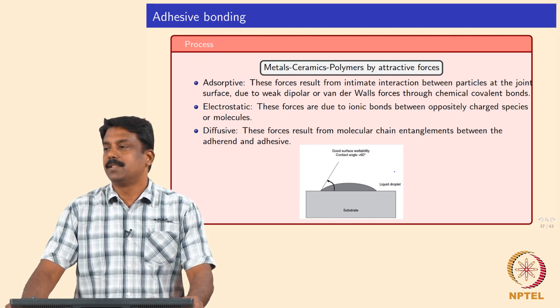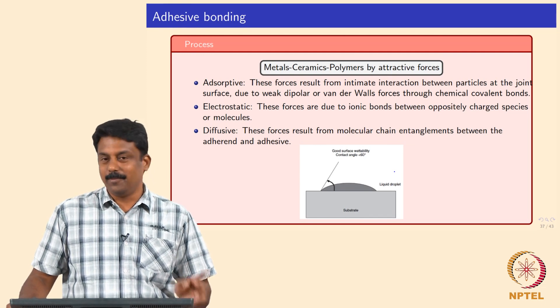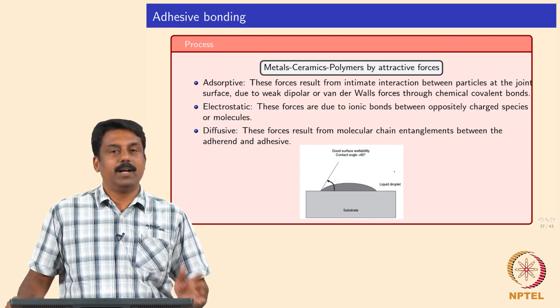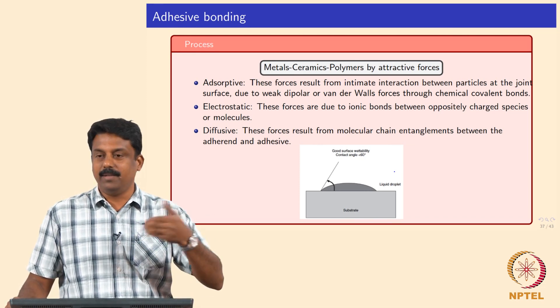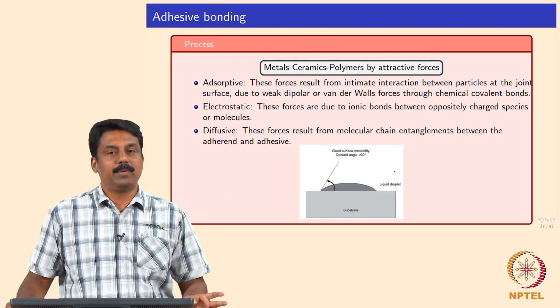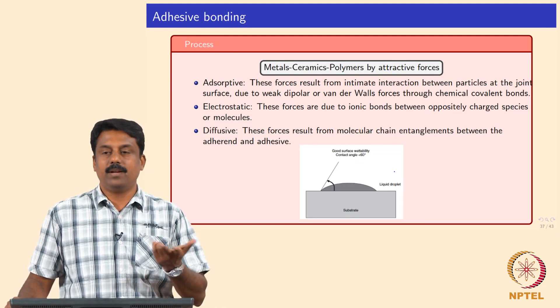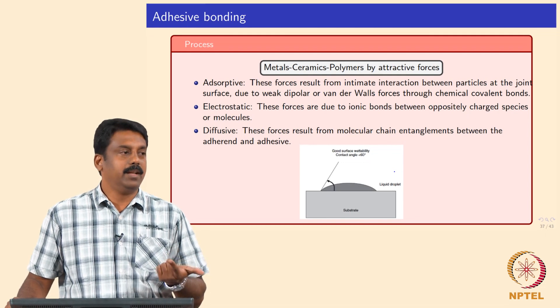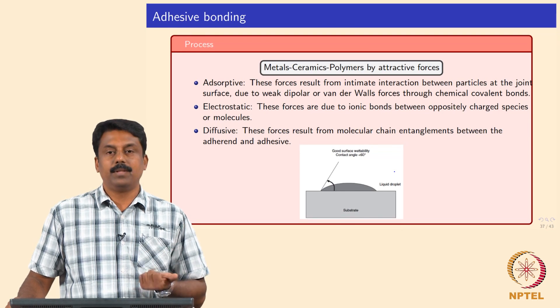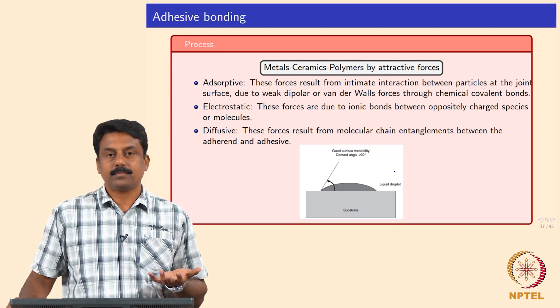So then we will move on to the last welding process, adhesive bonding. Thermoplastics are welded using the processes I taught you, but for thermosetting polymers, hot plate, induction, implant, or ultrasonic vibration welding are not really used. Thermosetting polymers are joined either by adhesive bonding or by mechanical fasteners.